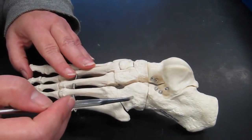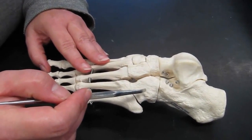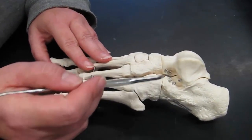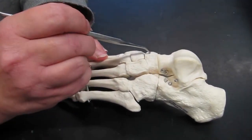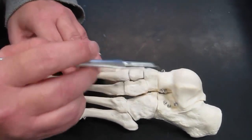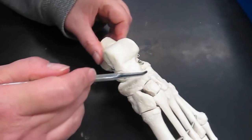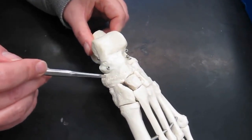Then this large bone over here is the cuboid. This bone here is the navicular. Let me turn that around so you can see it a little bit better. This is the navicular.